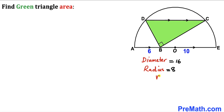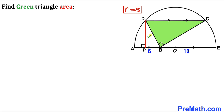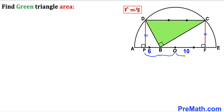Let me call this radius lowercase r, so r equals 8. In our next step, I have dropped perpendicular DP on this diameter and likewise dropped another perpendicular CF on this diameter as well. Since chord CD and this diameter are parallel, perpendicular DP is equal to perpendicular CF. Furthermore, segment PO is equal to segment OF, where O is the center. Let me label segment PO as x, so OF is x as well. Let me call perpendicular DP as y, so that side is y as well.